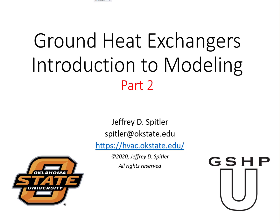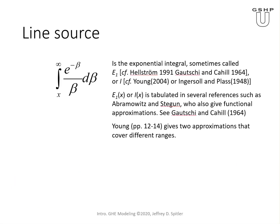Welcome back to part two of our introduction to modeling of ground heat exchangers. We left off last time having just introduced the line source and showed this integral, which is called the exponential integral, sometimes denoted by E sub one. You can see that in Hellstrom or in Gauchy and Cahill, which is a chapter in the well-known numerical methods book by Abramowitz and Stegen. It's also sometimes called I — Young uses that, and Ingersoll and Plass use that.